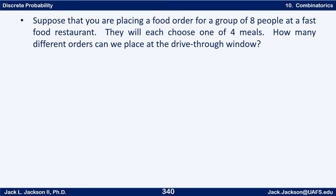Suppose you're placing a food order for a group of eight people at a fast-food restaurant. Each one will choose one of four meals. How many different orders can we place at the drive-through window? Notice that we can — and actually must — repeat some meals here. With eight people and only four meals to choose from, at least one of them has got to be chosen more than once.